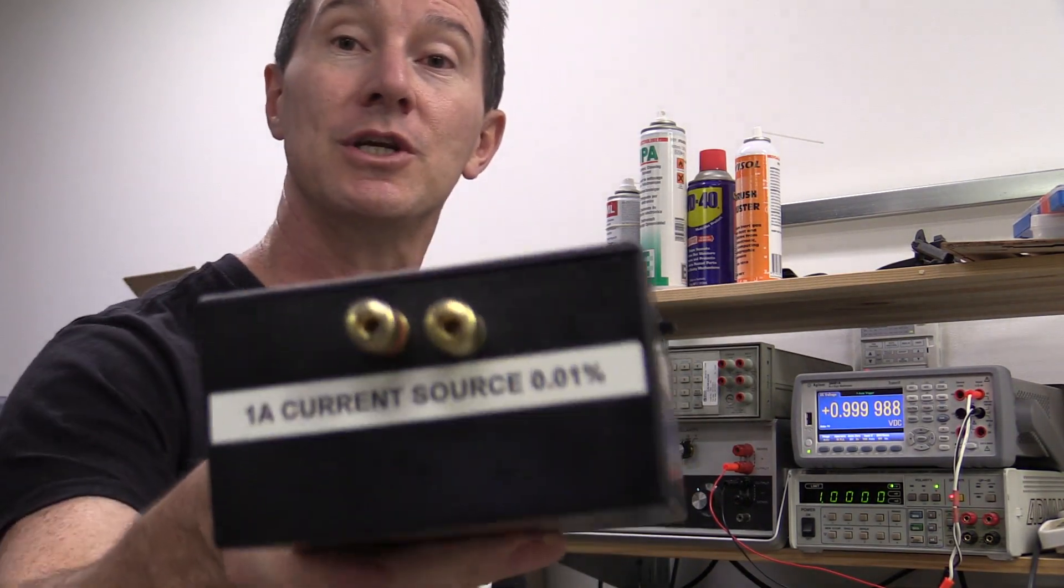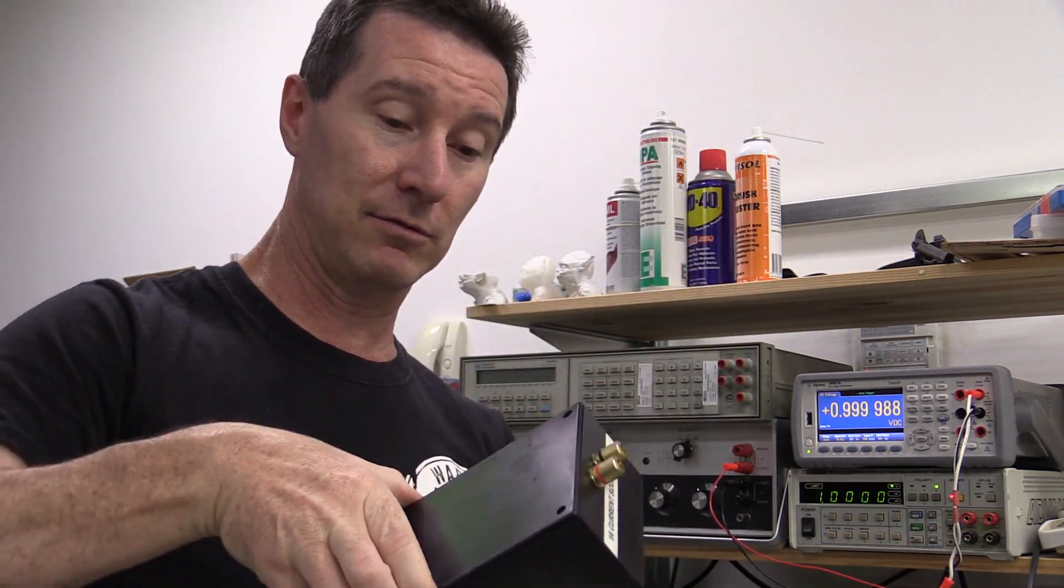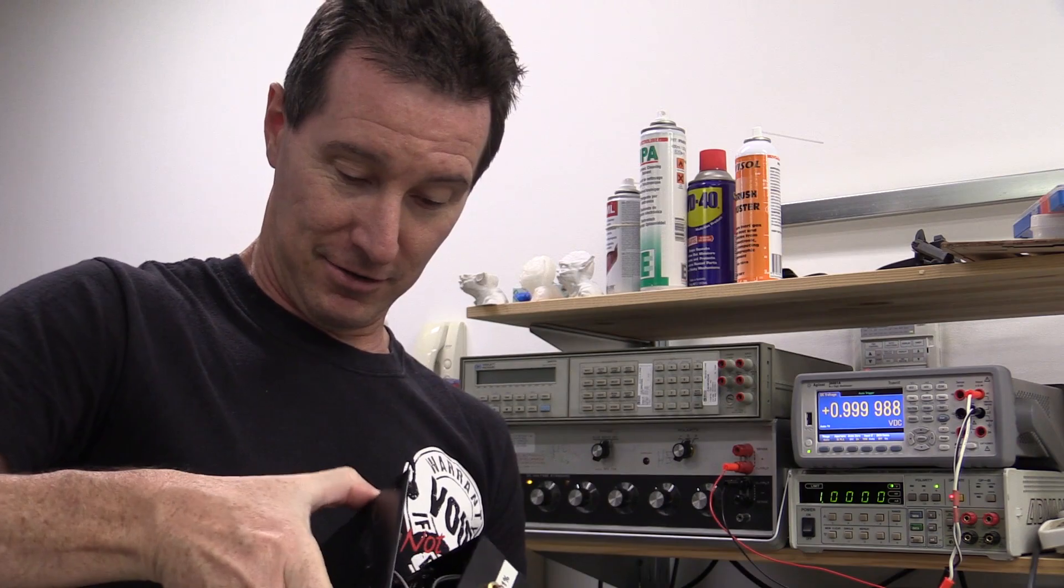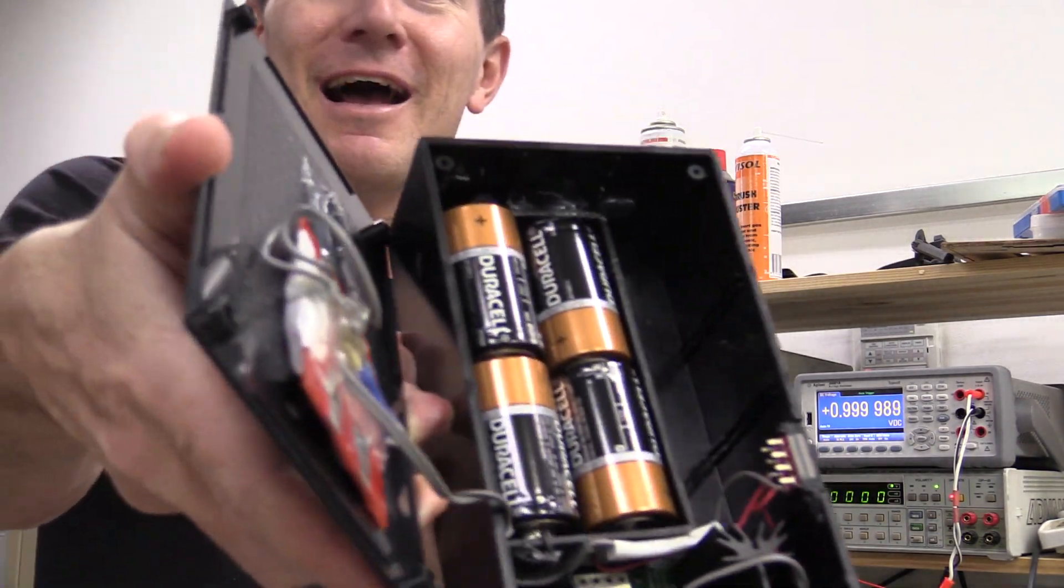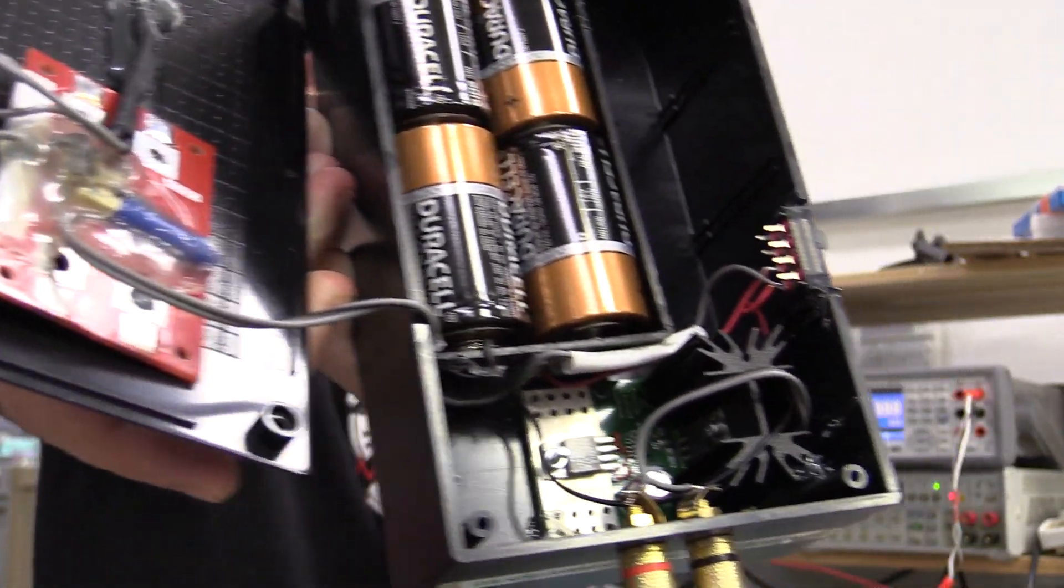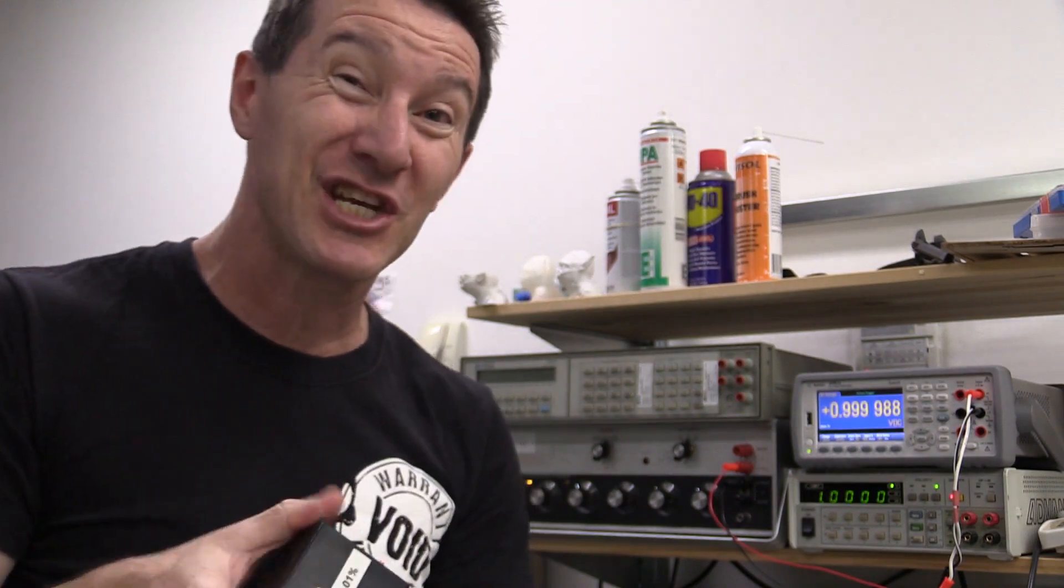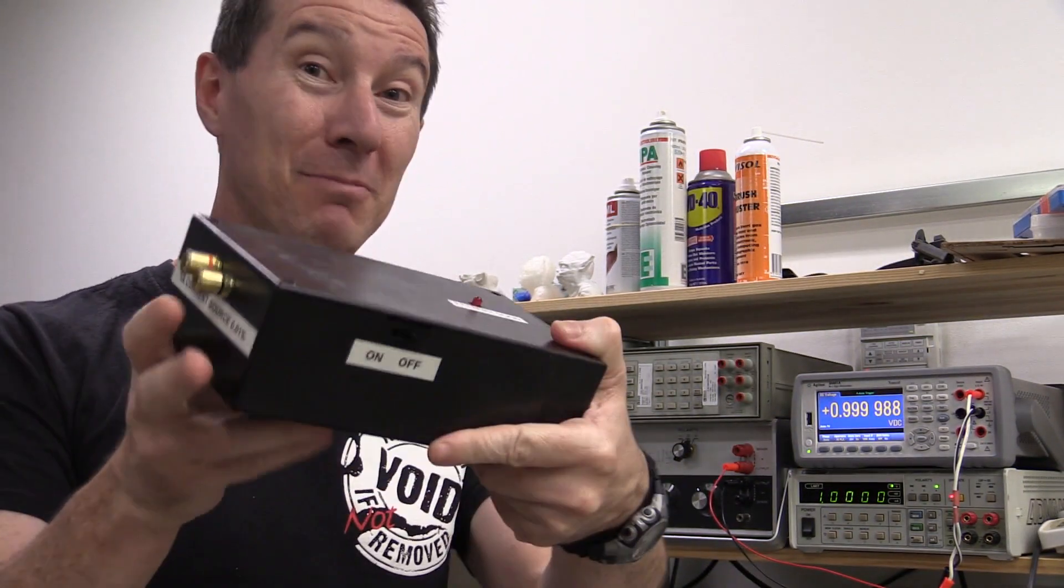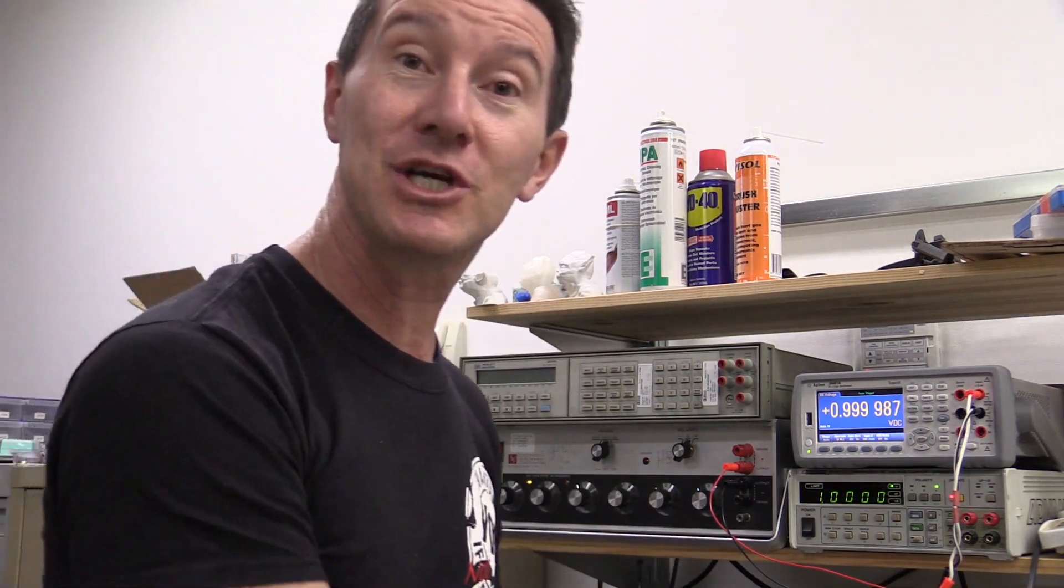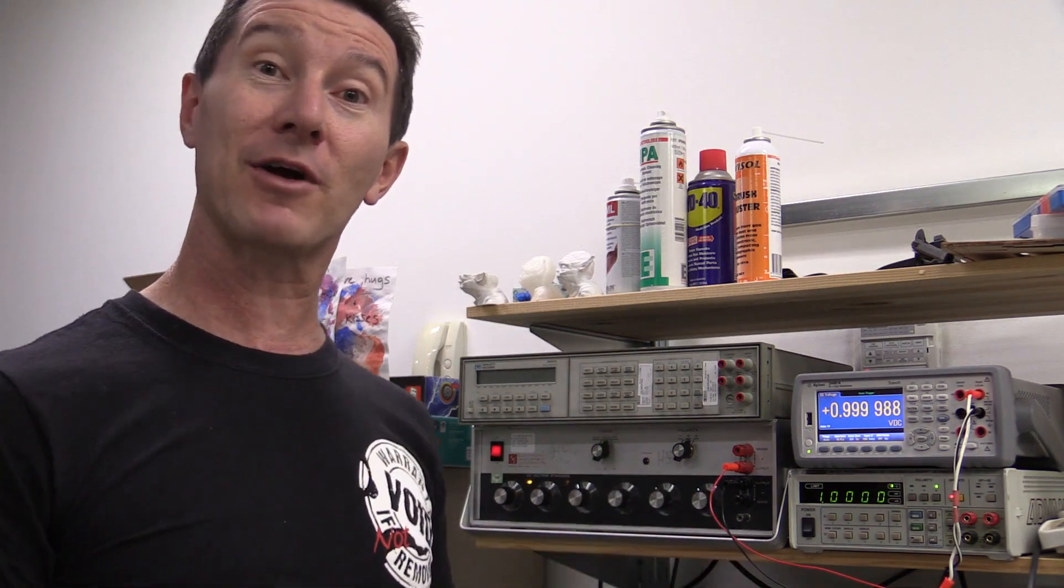And I've got a precision current source that I've built. Have I shown inside this before? It's not pretty. There you go. It's not pretty. But there is a small board down in there which is pretty schmick actually. It generates a really precision one amp current. So it may not look like much. But anyway, this generates the current reference for the microcurrent calibration.